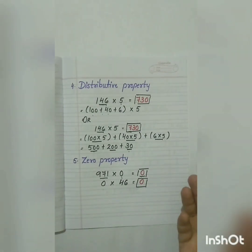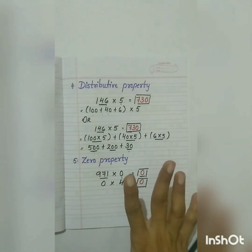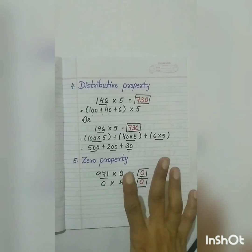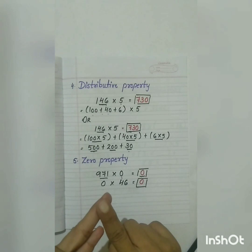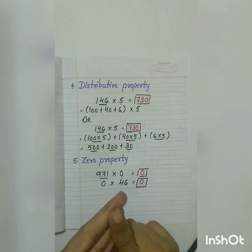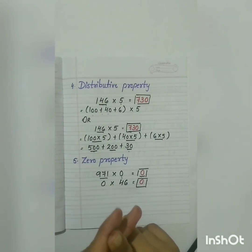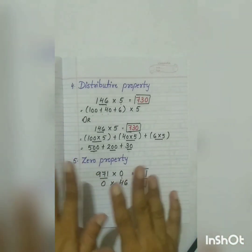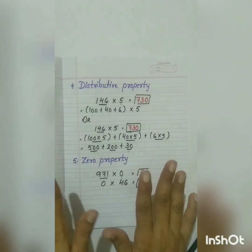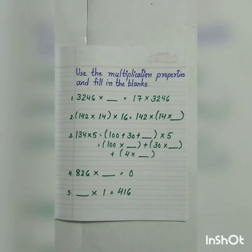So we have learned all 5 properties of multiplication: commutative property, associative property, multiplicative identity property, distributive property, and zero property. All of them are very easy, right? We have done with the properties of multiplication.